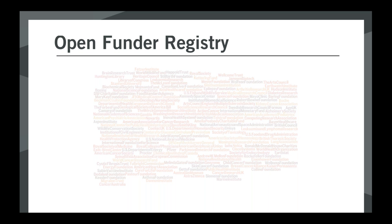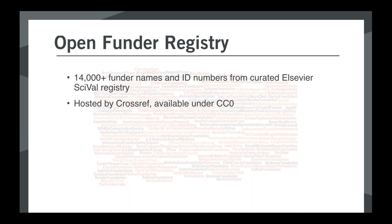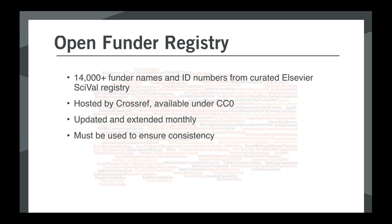At the heart of the project is the Open Funder Registry, which used to be called the Fundref Registry. When we started with funding data about four years ago, we had a list of about 4,000 international funder names. The last update, which was about three weeks ago, had over 14,000 funder names. It's an RDF file that's freely available to anyone to download. It contains funder names, alternate names and acronyms, and critically a unique funder ID for each organisation. We are adding new funders on about a monthly basis, either funders that have approached us or funders that the curation team has researched.